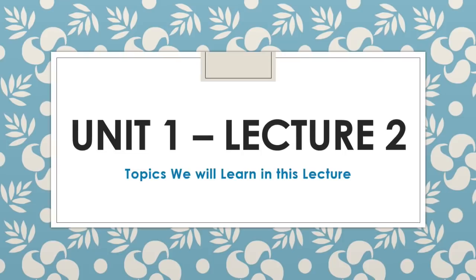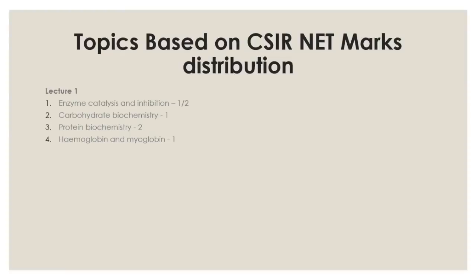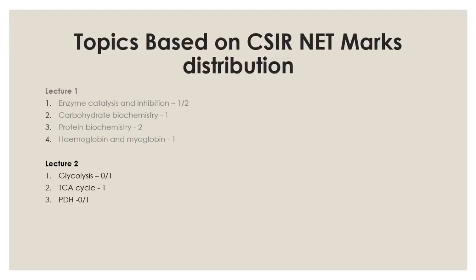This is Lecture 2 of Unit 1, the second and last lecture of Unit 1. In Lecture 1 we already covered four different topics. In Lecture 2 we are going to cover glycolysis, Krebs cycle, pyruvate dehydrogenase complex, electron transport chain and its inhibitors, gluconeogenesis, and the pentose phosphate pathway.